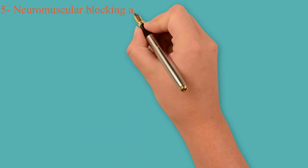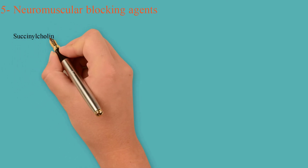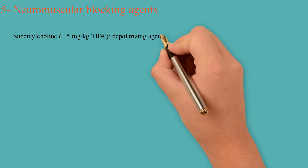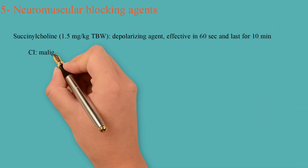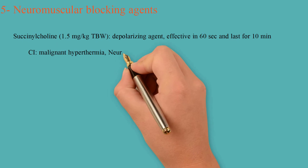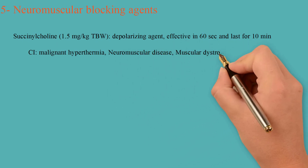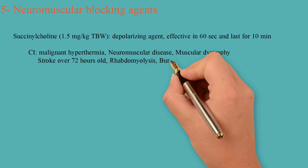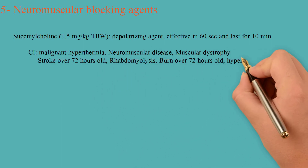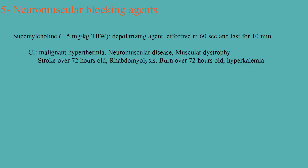Step 5 is neuromuscular blocking agent. Choose between two agents. First is the depolarizing agent succinylcholine at 1.5 mg per kg of total body weight. Paralysis will occur in 60 seconds and last for 10 minutes. It is contraindicated if your patient has ever had malignant hyperthermia. Also avoid using it with hyperkalemia, neuromuscular disease, muscular dystrophy, rhabdomyolysis, or if your patient had a stroke or burn older than 72 hours.